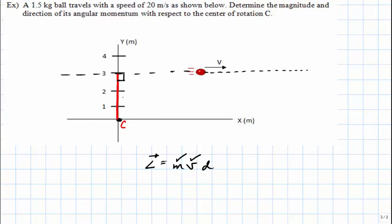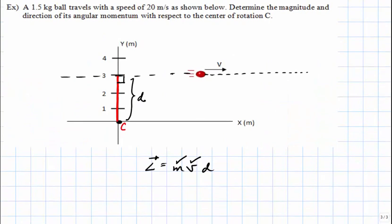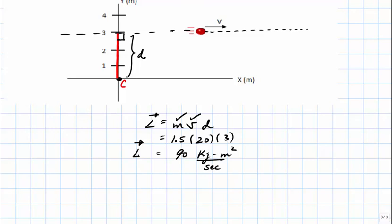That red line represents D in our equation. The mass equals 1.5 kilograms, the velocity equals 20 meters per second, and D equals 3 meters. Multiplying these values together, the result equals 90 kilogram meters squared per second. We now have to determine whether this value is positive or negative.